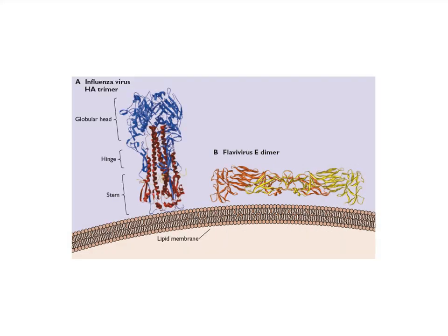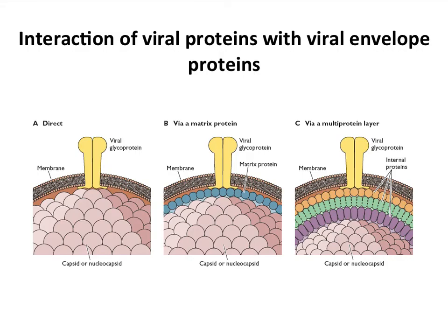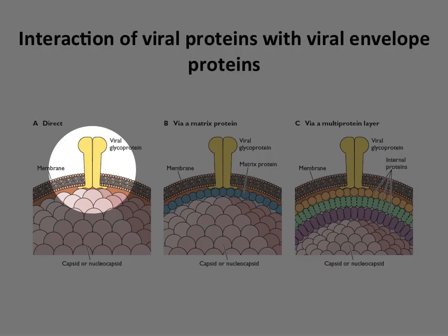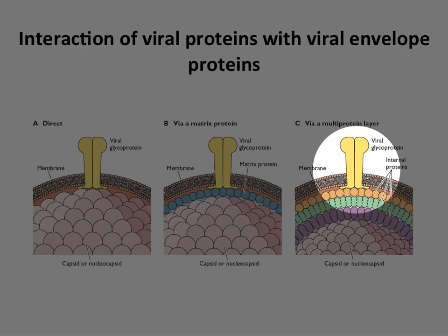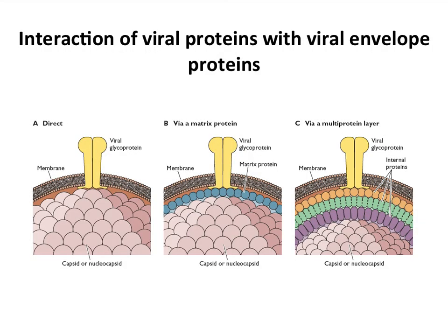Q: Are these proteins attached to anything within, below the viral membrane? A: Yes, sometimes they are attached to other viral components. So the question was, are there interactions of these glycoproteins with viral proteins? The answer is yes, and they can occur in several ways. Here is a schematic of a viral membrane. The viral glycoproteins can interact directly with a capsid. Sometimes there is a protein in between the capsid and the envelope called an M or matrix protein, and the glycoproteins can interact with that. Sometimes there's a more complex layer on top of the capsid or nucleocapsid. In most cases, there is some kind of interaction, which is probably needed for structural integrity of the particles.